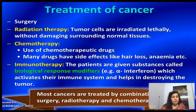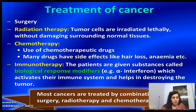Treatment of cancer includes surgery, where the tumor is surgically removed. Radiation therapy is another option, where tumor cells are irradiated lethally without damaging the surrounding normal tissue. Chemotherapy involves the use of drugs, though many of these drugs have side effects such as hair loss and anemia.